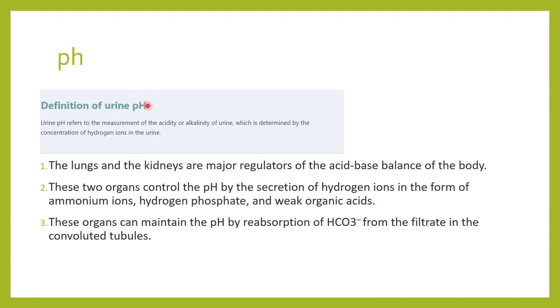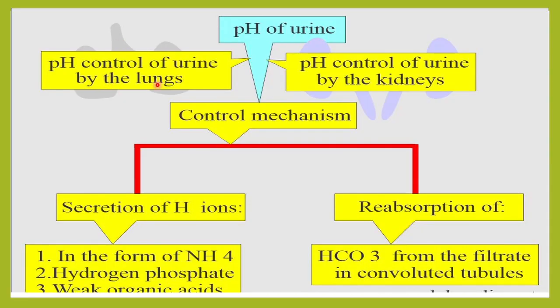Urine pH refers to the measurement of acidity. The kidneys maintain acidity by reabsorbing bicarbonate to maintain alkalinity. The lungs and kidneys both play a very important role in maintaining the acid-base balance in our body.